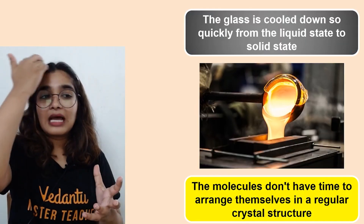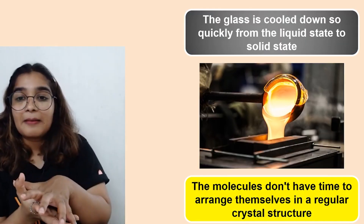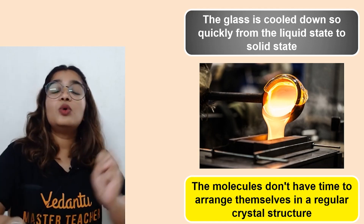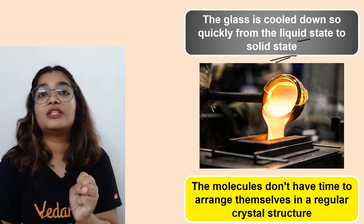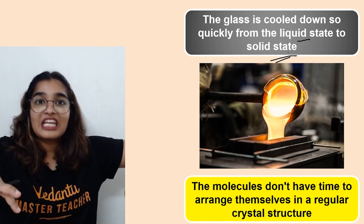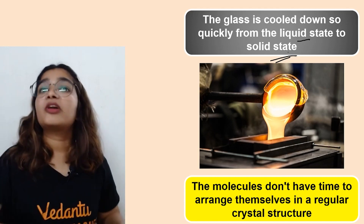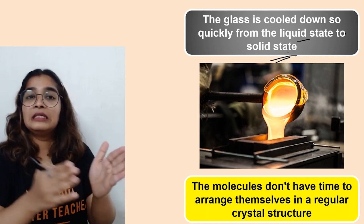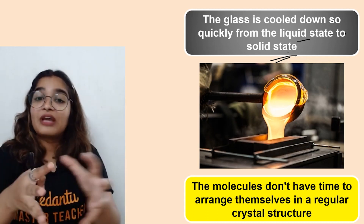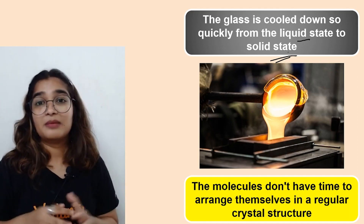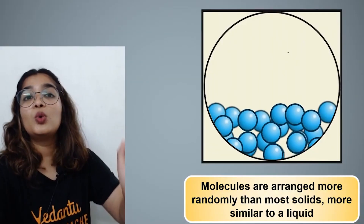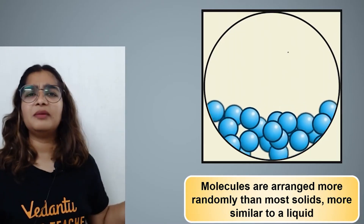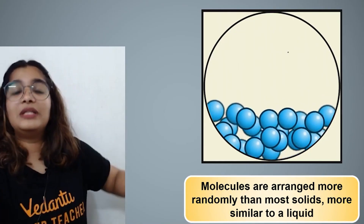What happens is that glass is cooled very quickly from the liquid state to the solid state — not at its melting or freezing point. Because of this rapid cooling, the molecules do not have time to arrange themselves into a regular lattice. Compare this to water forming ice, where it is brought to its freezing point and molecules arrange themselves properly. That does not happen with glass.